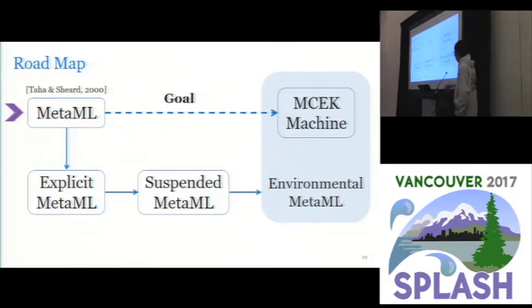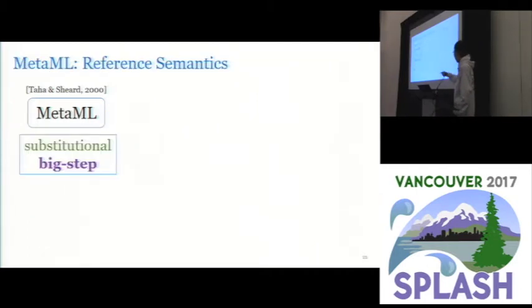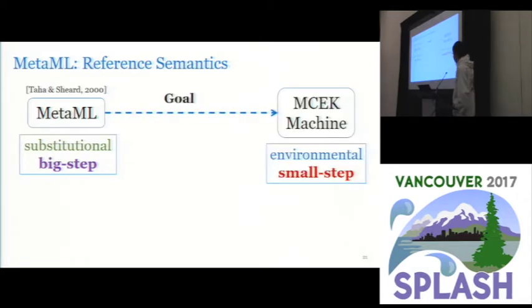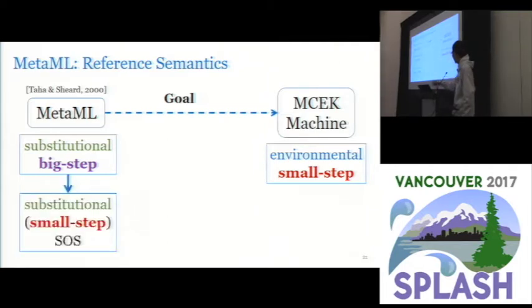So at the starting point of refining semantics, which reference semantics should we use for MetaML? Well in that paper, they used substitutional big step semantics. Our goal is to develop MCEK machine, which is environmental small step semantics. So it seems a natural step to start with some small step semantics. Hence, we derive this substitutional SOS based on the big step semantics and we use it as our reference semantics.